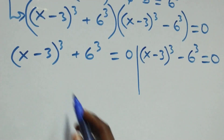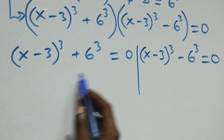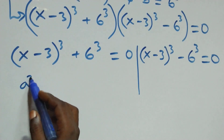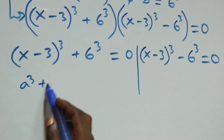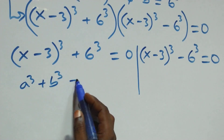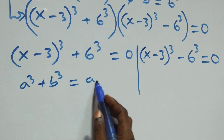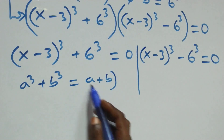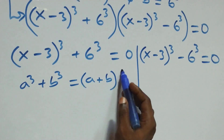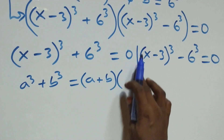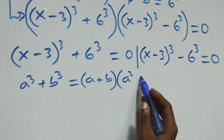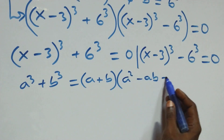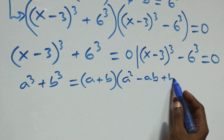This follows from: a raised to the power 3 plus b raised to the power 3, which can be seen as (a plus b) times (a squared minus ab plus b squared).